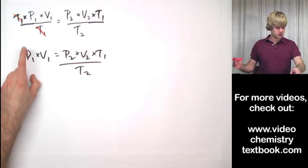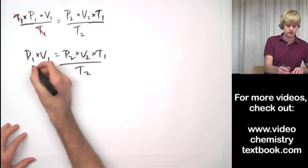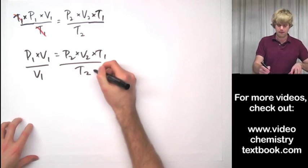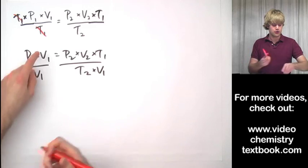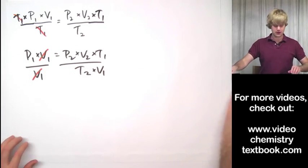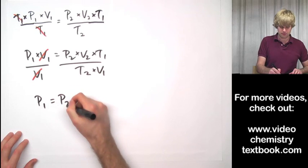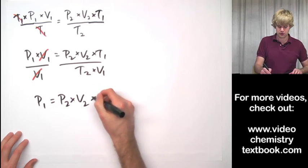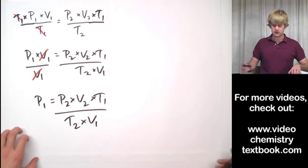The next thing I want to do since I'm solving for P1 is to get rid of the V1 that's up here. So I'm going to divide both sides by V1, and now I add V1 to the bottom of the fraction there. So I have V1 over V1 and those cancel out, and I'm left with P1 equals P2 times V2 times T1 divided by T2 times V1.